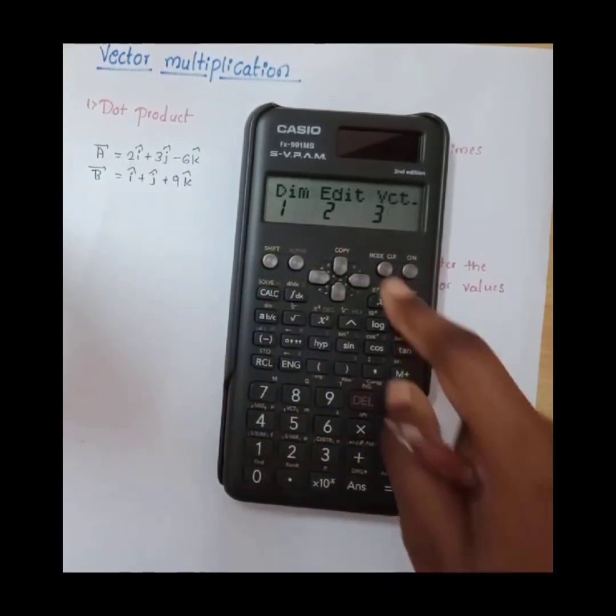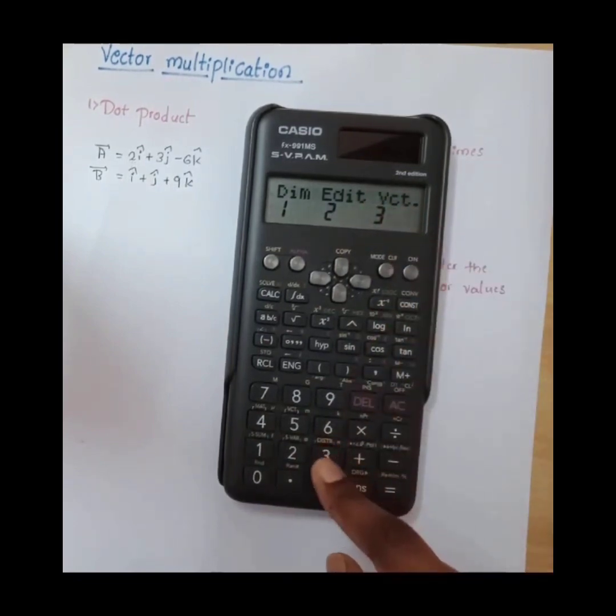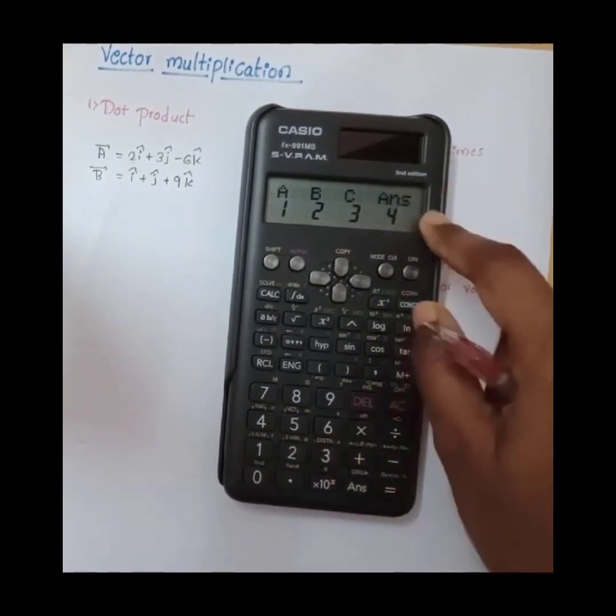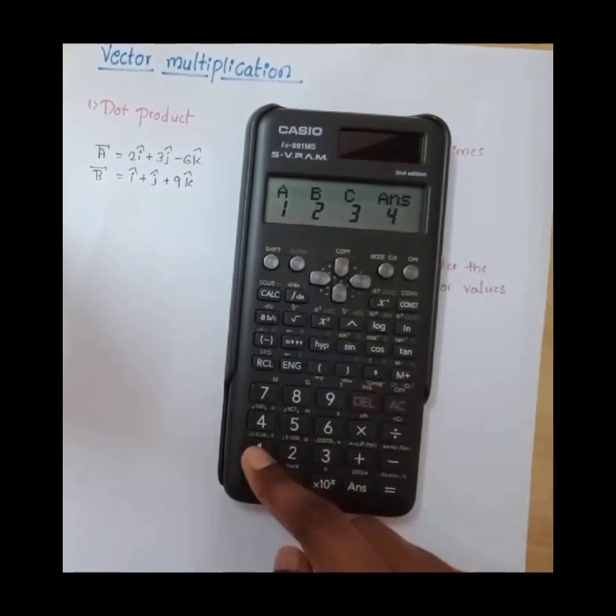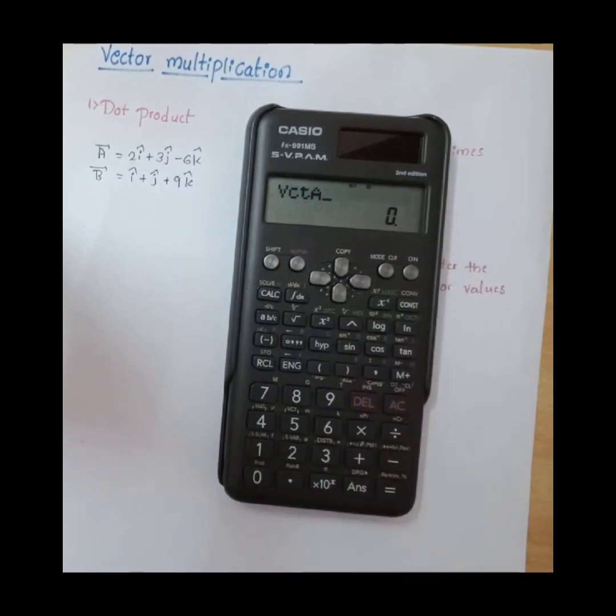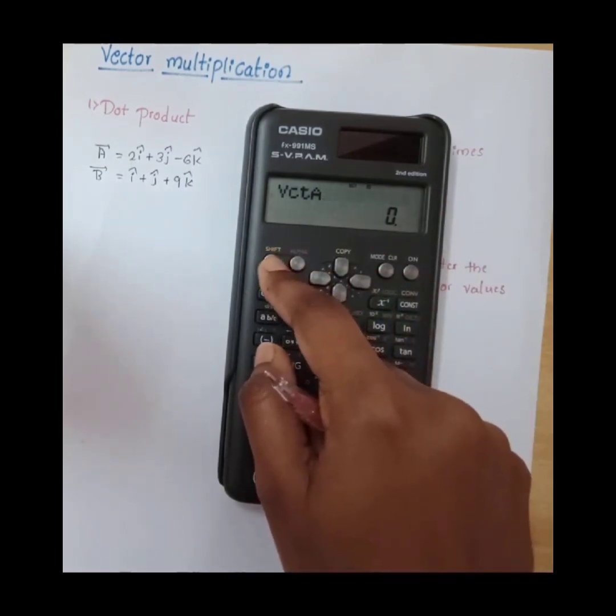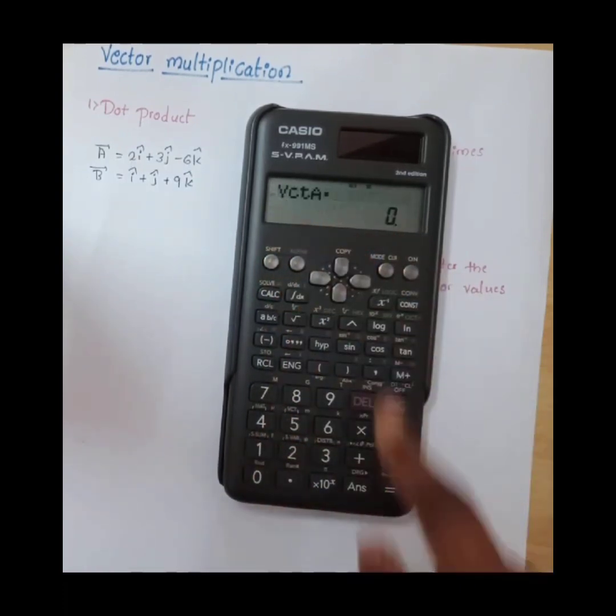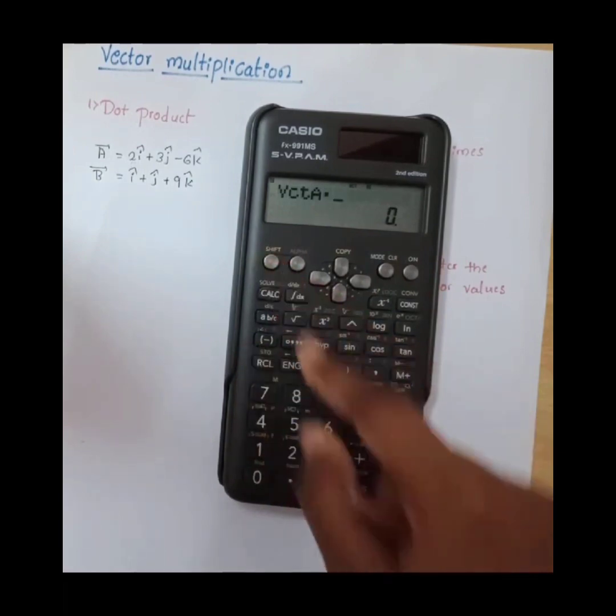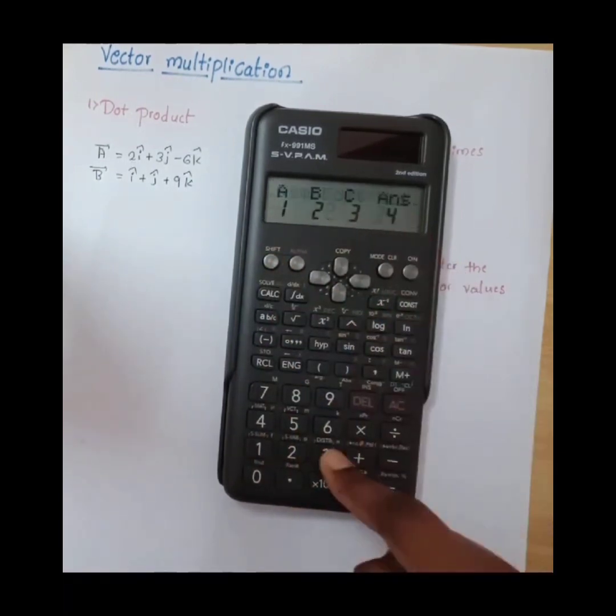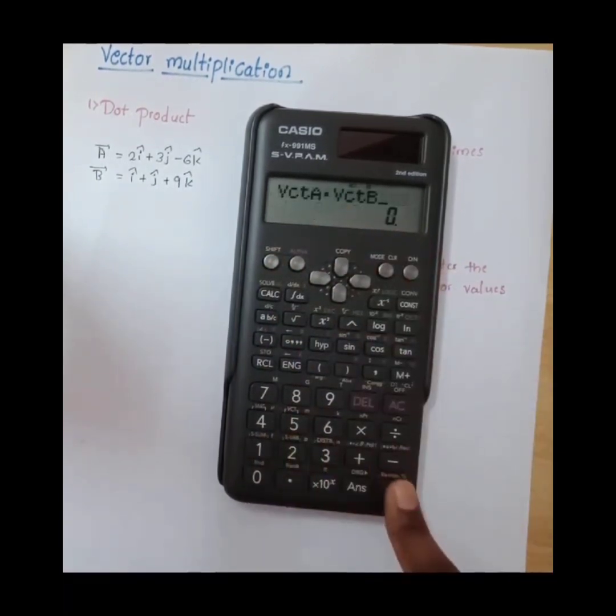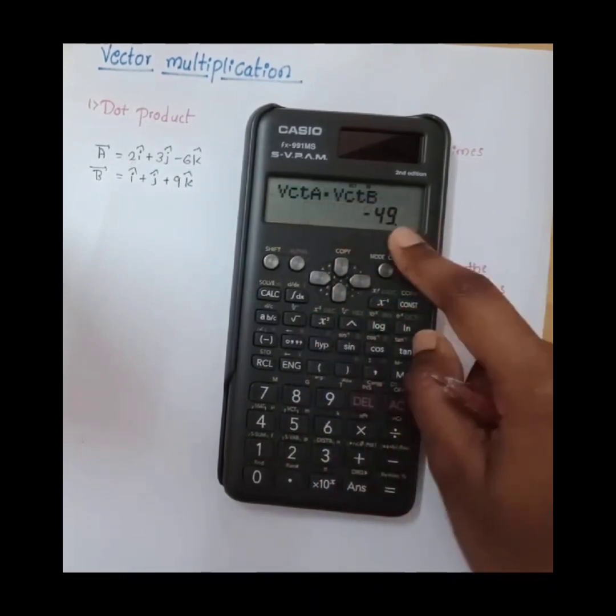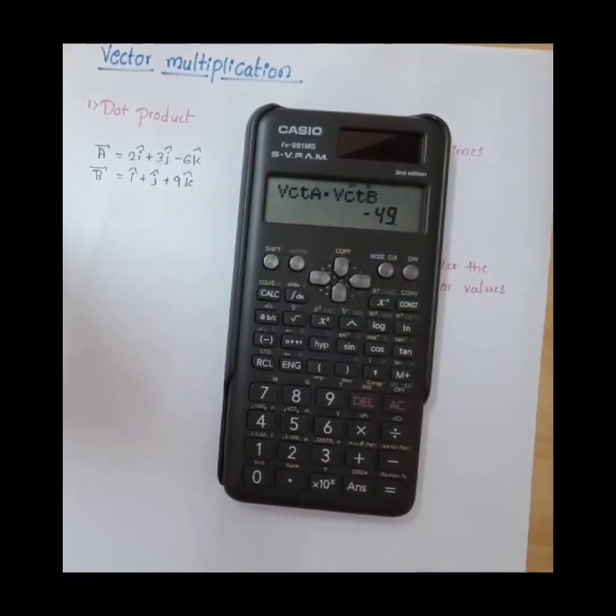Enter three to choose vector. Vector one—vector A has come. Now we want dot, so again shift five, then dot. Again shift five, three to choose vector B. Vector A dot vector B equals minus forty-nine. Thank you.